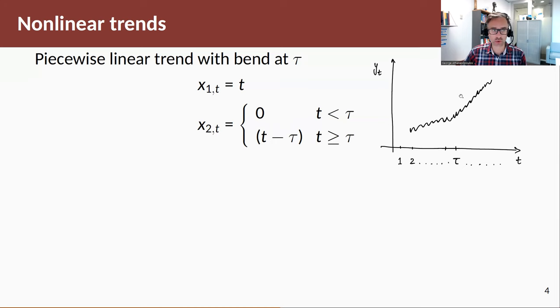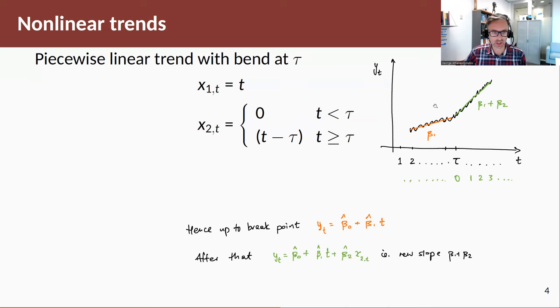If we want to use a piecewise linear trend, we specify the variables like this. When we fit them, we estimate two slopes. The first slope β₁ is for the first part of the sample, from t equals 1 to τ. Then the new slope is equal to β₁ plus β₂, which is estimated for past point τ.